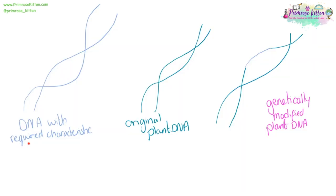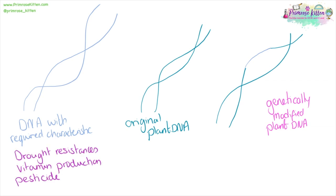We can genetically modify plant DNA by taking a gene with our required characteristic — whether that is a drought-resistant gene so countries that don't get much rain can survive better, a gene which produces a vitamin so that countries with poor food security can get more nutrients from the food they grow, or pesticide resistance or the ability to resist being eaten by pests so that yields are higher. We can take that gene, put it into the original plant DNA, producing a genetically modified plant. We can add in the new gene, produce seeds, and farmers can grow those seeds so the plants will have this new desired characteristic.